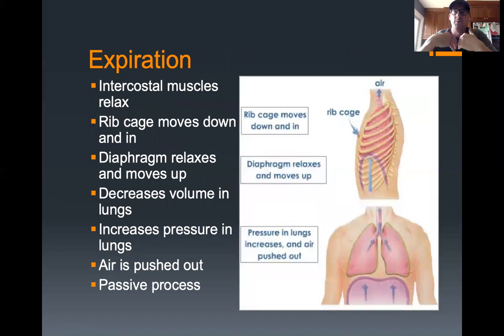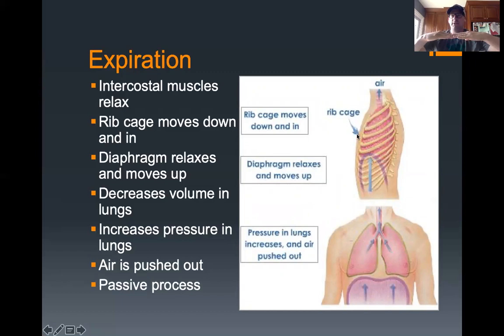Breathing out, or exhaling, is called expiration. When you breathe out, the intercostal muscles between the ribs relax, so the rib cage moves down and in, and the diaphragm that was pulled tight relaxes and moves up. That decreases the volume in the lungs, which causes an increase in pressure — because Boyle's law: there's an inverse relationship between pressure and volume. Volume goes down, pressure goes up, and air is forced out. Again, this is a passive process.